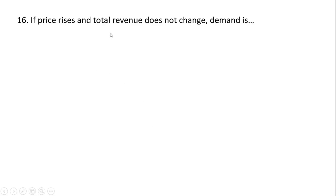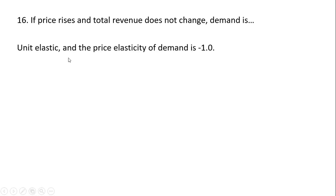Question 16: If price rises and total revenue does not change, demand is unit elastic. That means the price elasticity of demand is −1. Price goes up, quantity falls, but the price increase exactly offsets the quantity decrease, and total revenue remains unchanged.